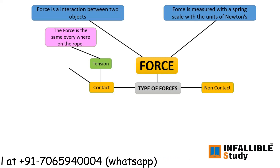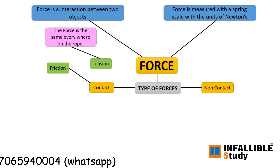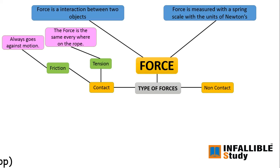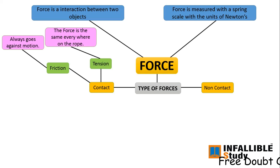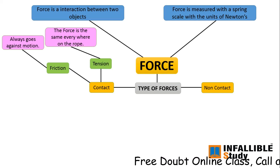The second contact force is friction. Friction always acts against the motion. For example, when you ride a bicycle on the road, friction always acts against the motion — meaning opposite to your direction of movement.